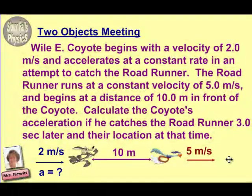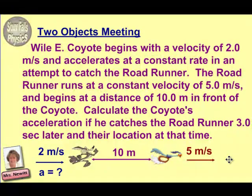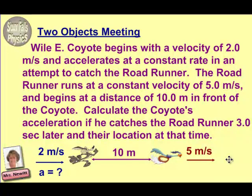Welcome back, everyone. Here's your Sioux Falls physics teachers looking at an example of two objects meeting. In this example, we're looking at Wile E. Coyote and the Road Runner. He begins with a velocity of 2 meters per second and accelerates in an attempt to catch the Road Runner. The Road Runner runs at a constant velocity of 5 meters per second and begins at a distance of 10 meters in front of the coyote.